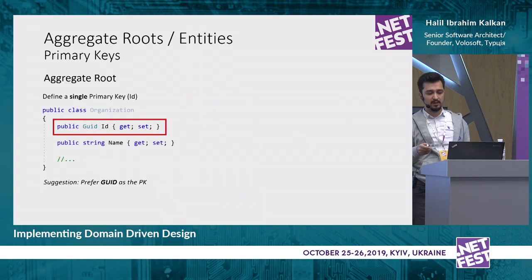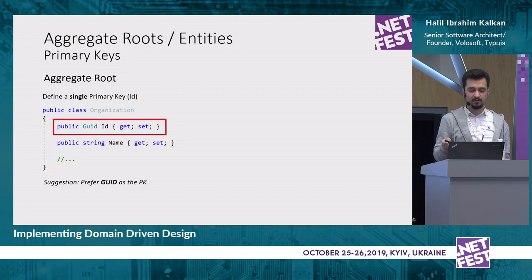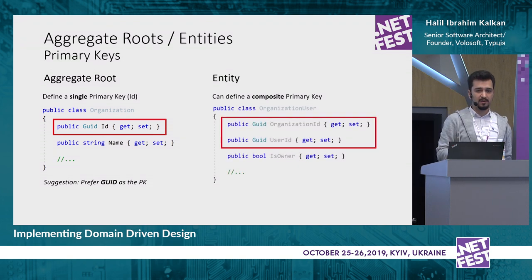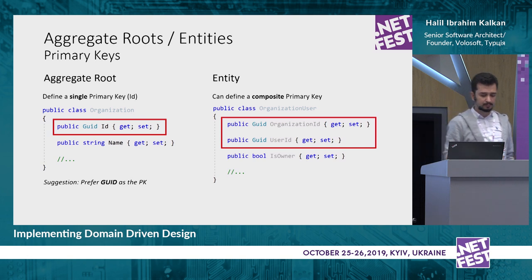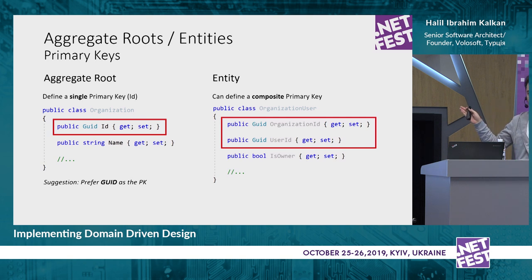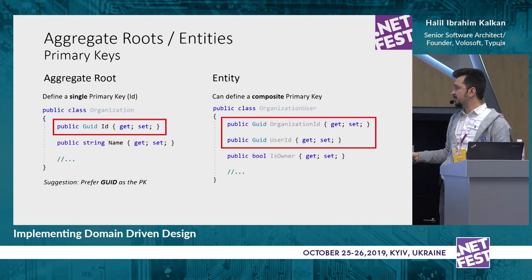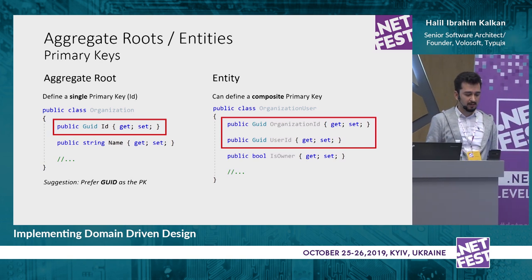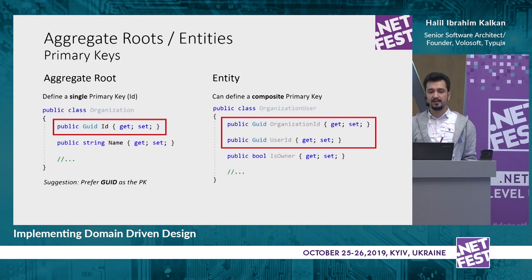For the primary key, an aggregate root typically has a single primary key, generally a GUID. For entities inside aggregates, you can define composite primary keys — multiple properties as a single primary key. For NoSQL databases there is no concept of composite primary keys because you retrieve the whole aggregate and don't query sub-entities individually. But for relational databases, you need primary keys for all tables, so composite primary keys work well for entities inside aggregates.